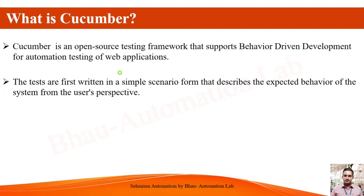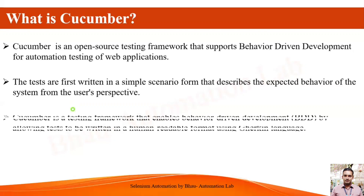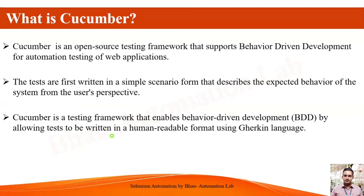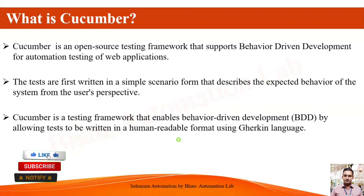In Behavior Driven Development, tests are first written in simple scenarios that describe the expected behavior of the system from the user's perspective. Cucumber is a testing framework that enables BDD by allowing these tests to be written in a human-readable format.